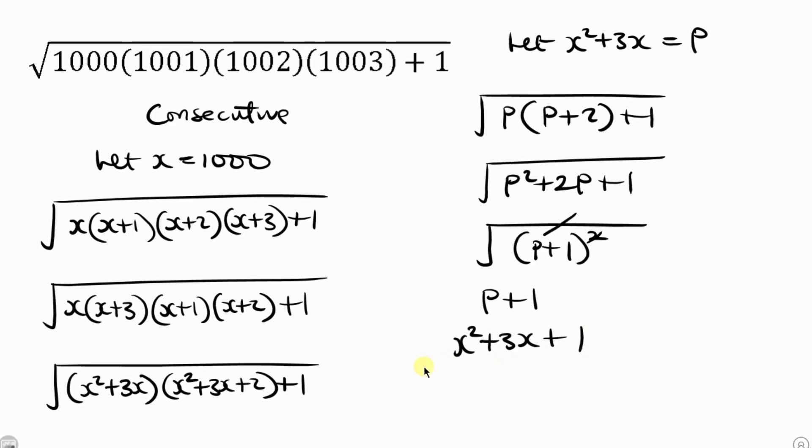Now this expression is easy for us to evaluate since we know that x is equal to 1000. So putting 1000 in place of x, we're going to be having 1000 squared plus 3 times 1000 and then plus 1.